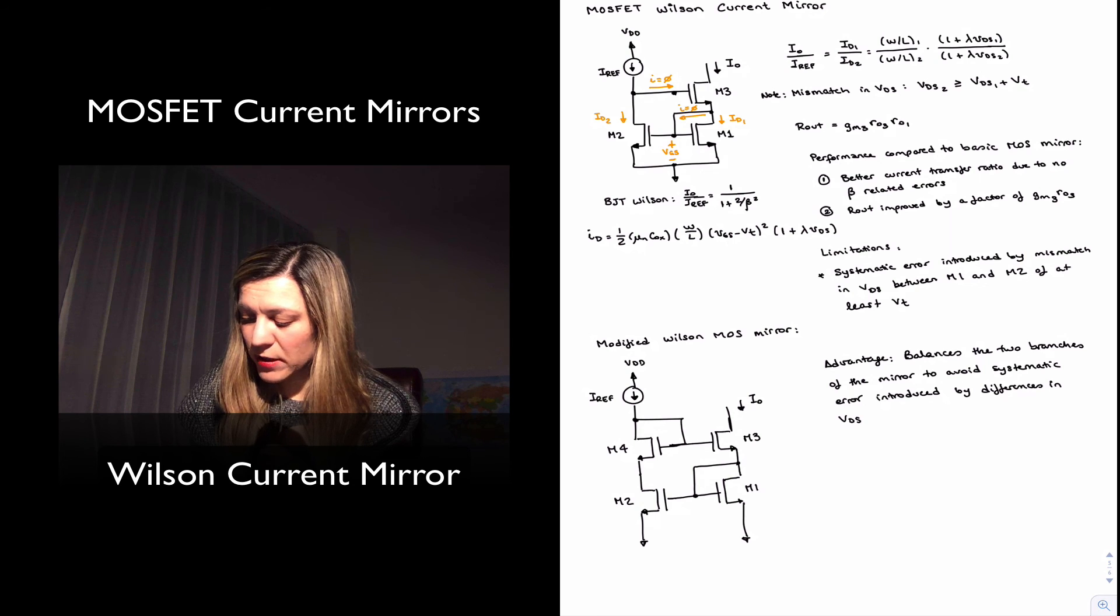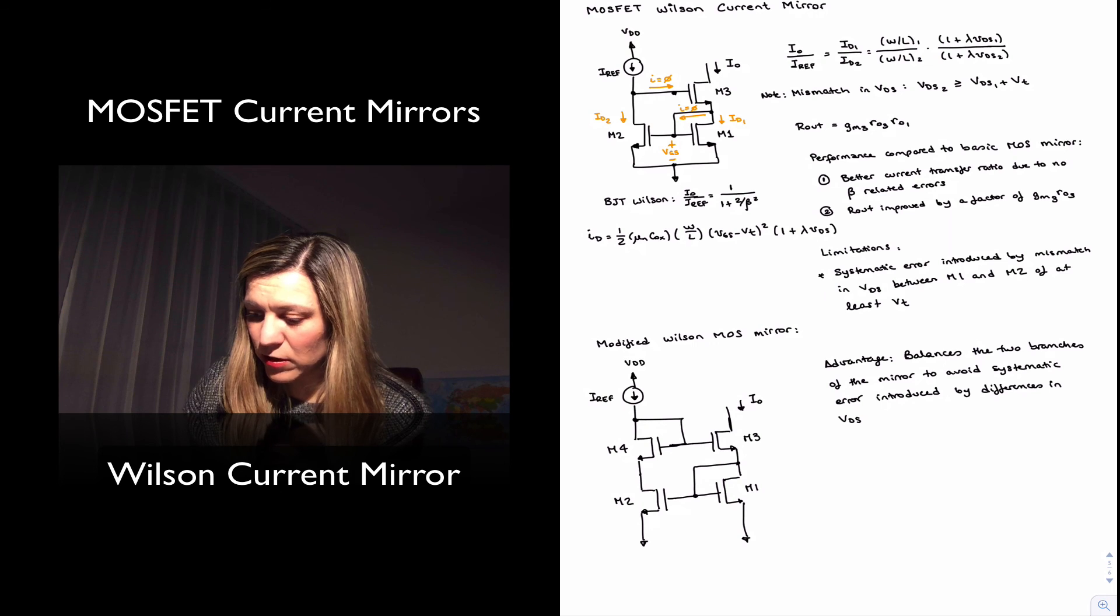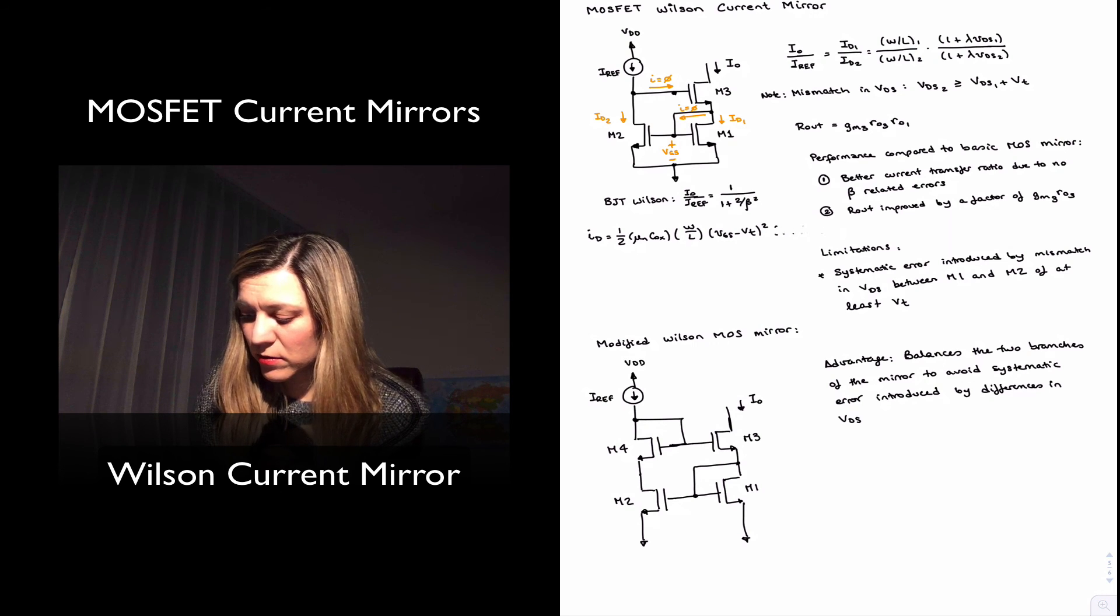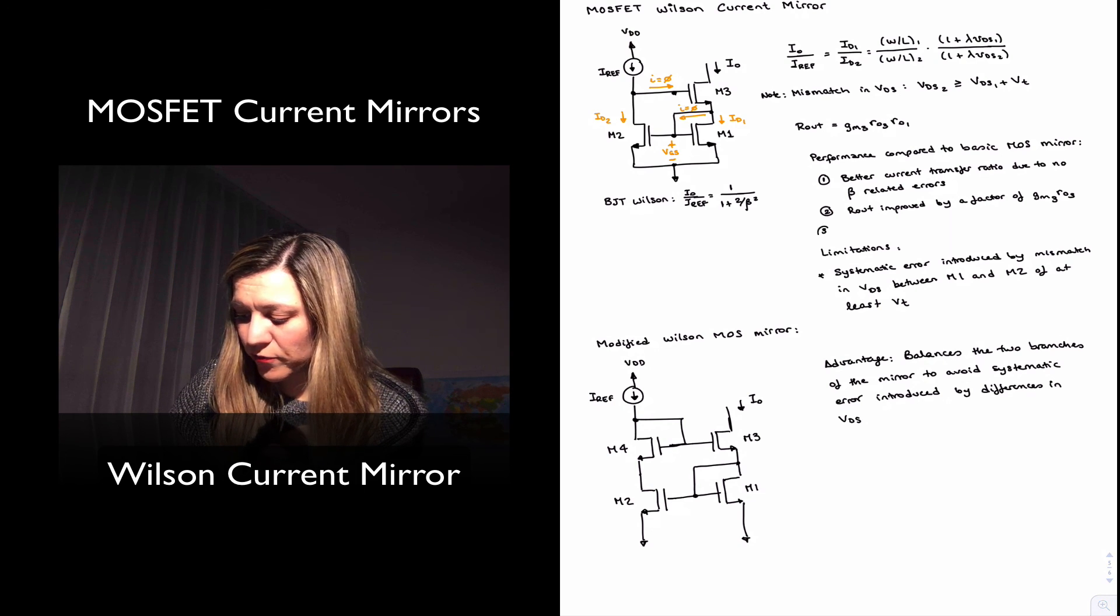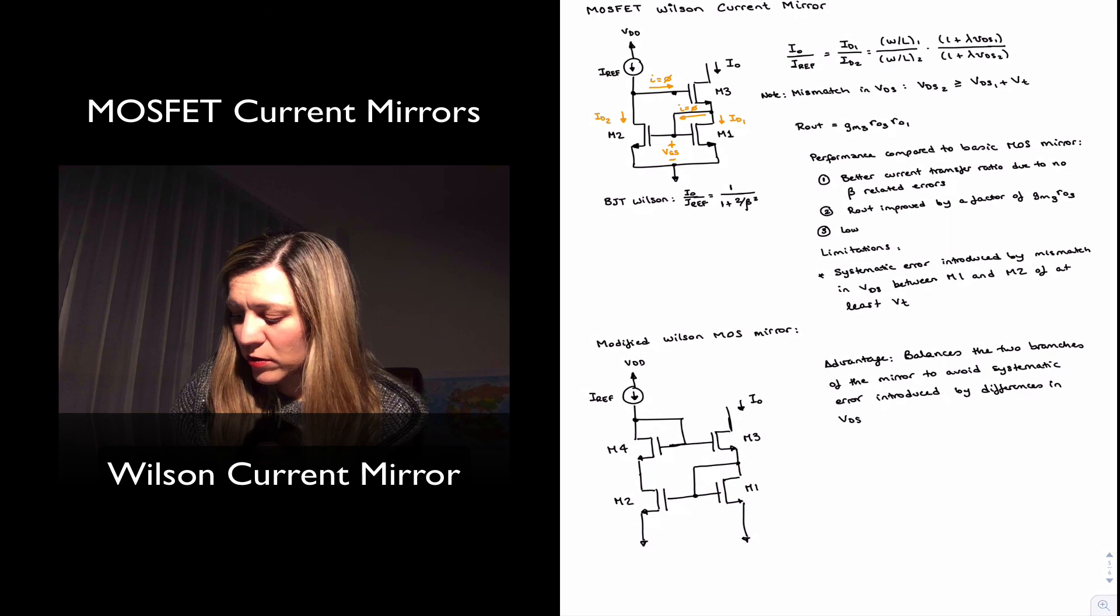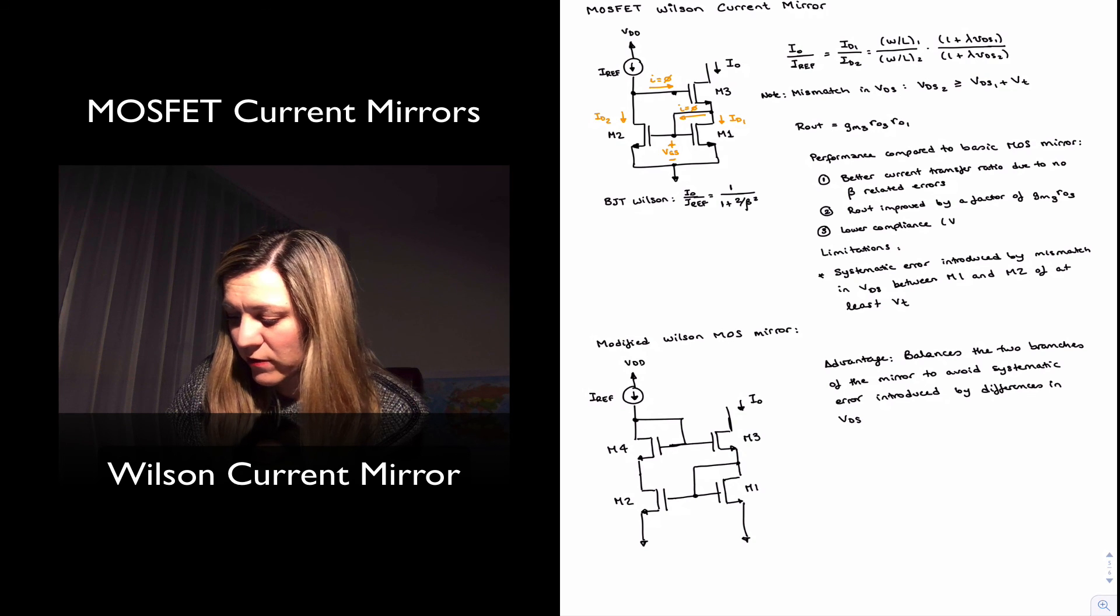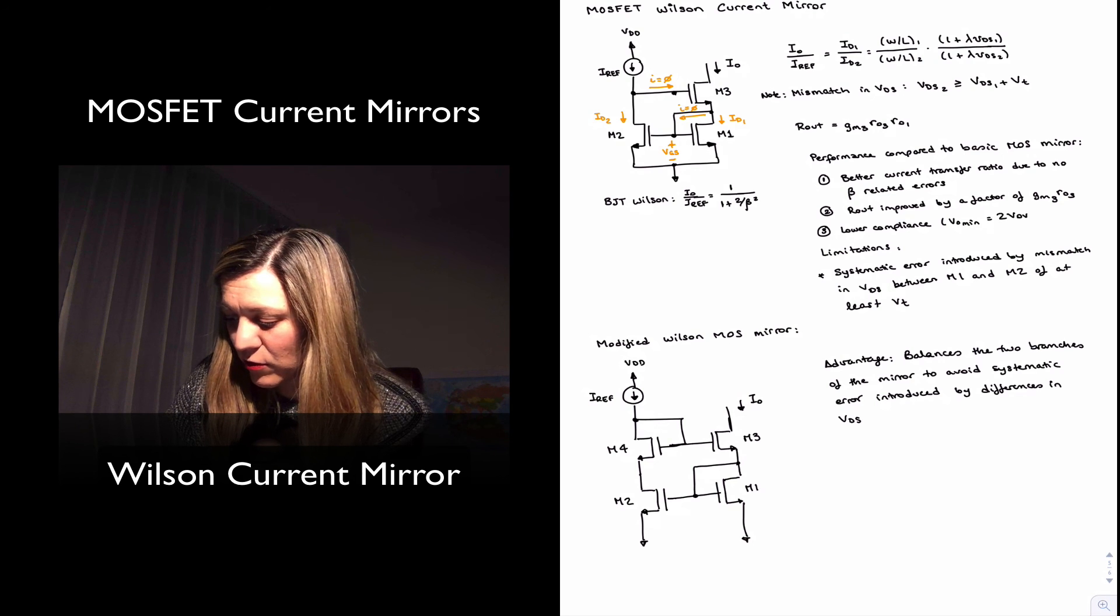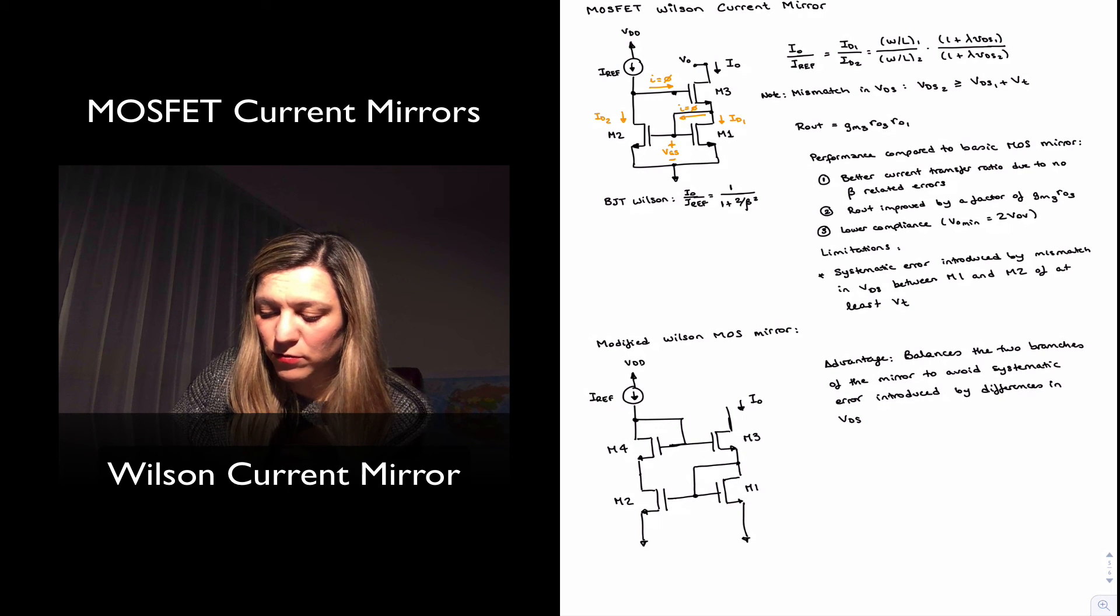And so perhaps that's another limitation, or I should say perhaps another performance note as compared to the basic mirror. This other difference in performance is that lower compliance, meaning V out min is equal to two times VOV. And obviously V out will be the voltage at the output node right there.